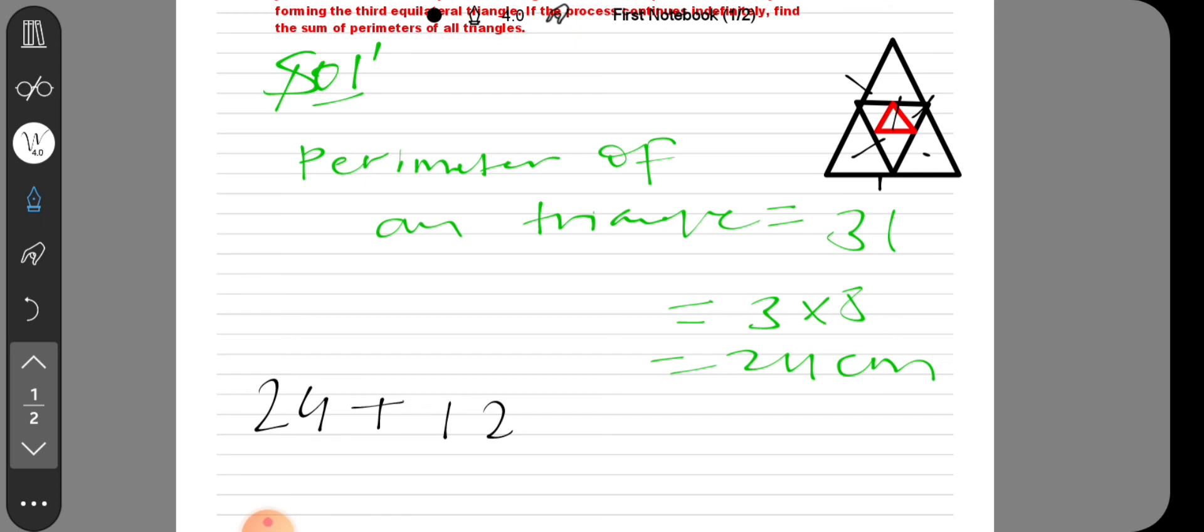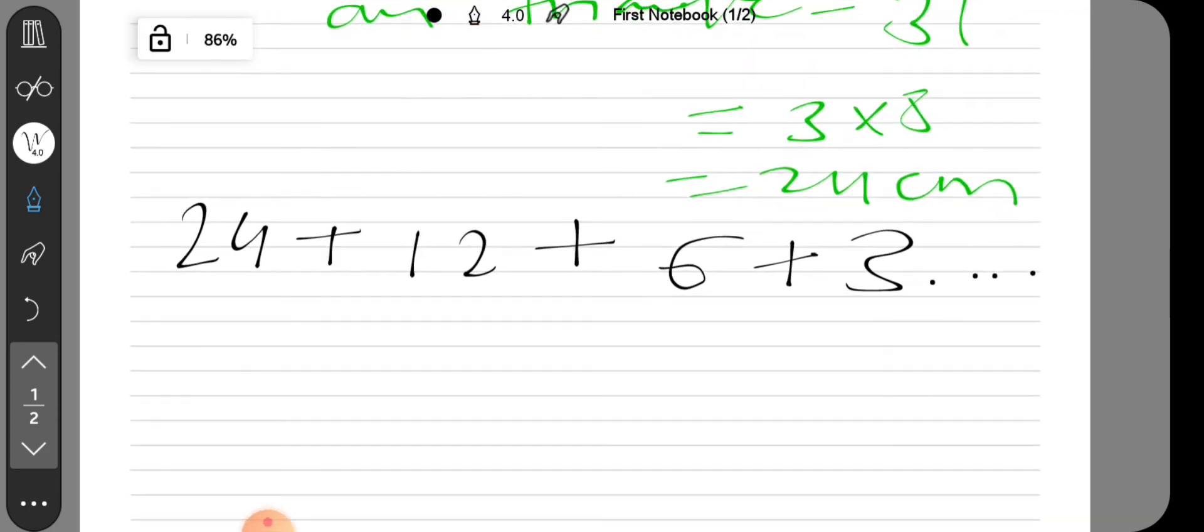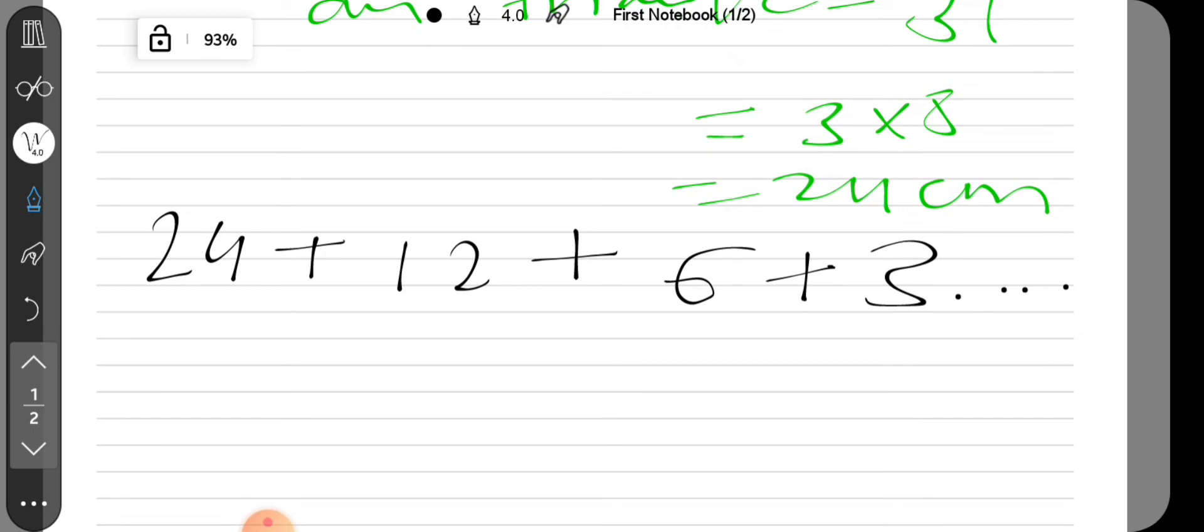Now we have 3 into 4, which is 12. Then 6, then 3, and so on. The series becomes 24 plus 12 plus 6 plus 3 dot dot dot.